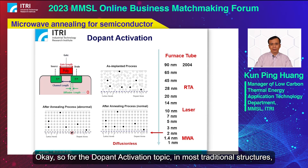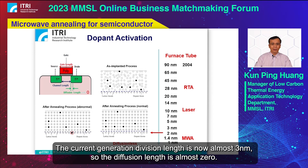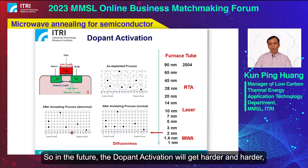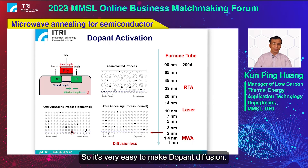For dopant activation in traditional MOSFET structures, the gate length has progressed from 90 nanometers down to one nanometer. The current generation is almost at the three nanometer node, where the diffusion length is almost zero. Dopant activation is getting harder and harder because the annealing temperature is currently above 900 degrees C, making it very easy to cause dopant diffusion.